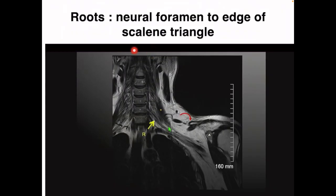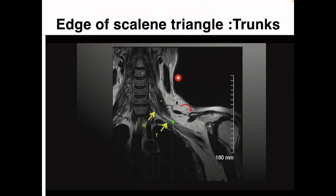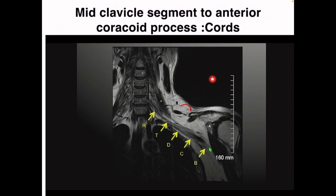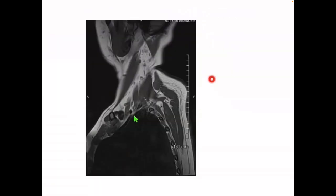The cords run posterior to the pectoralis minor muscle and subsequently give rise to the terminal branches. The roots and trunks are supraclavicular, while divisions are retroclavicular and the cords are infraclavicular. The roots extend from the neural foramen to the edge of the scalene triangle. From the edge of the scalene triangle we have the trunks, from the scalene triangle to midclavicular level we have the divisions, and from the midclavicular level to the coracoid process we have the cords, after which we have the branches. This is a sagittal T2-weighted image showing the anterior and middle scalene muscle with the trunks of the brachial plexus and the subclavian artery.